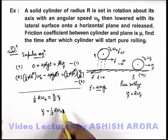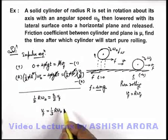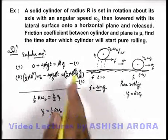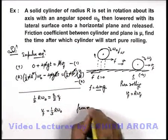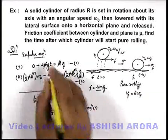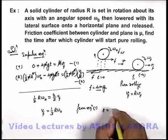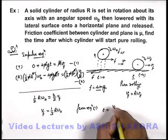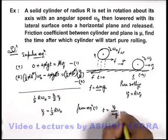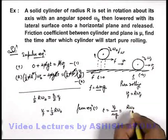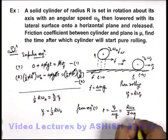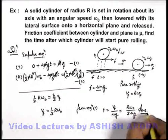And as we're required to find the time after which it'll start pure rolling, then we can use it from equation one. So we can write from equation one we're having t is equal to v final by mu g. So if we just substitute the value of v final it is r omega not by three mu g. That'll be the answer to our problem.